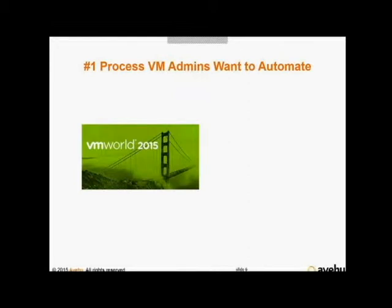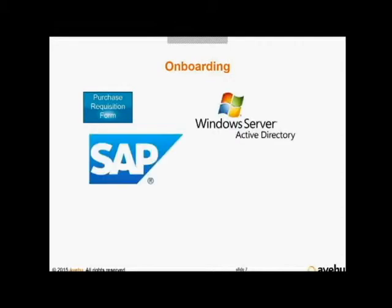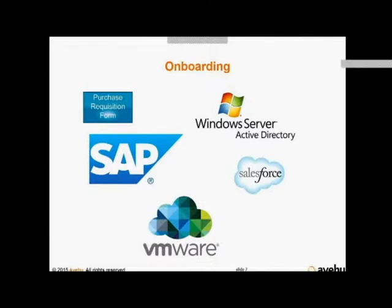Going back to VMworld 2015, with all the many processes that VM admins could apply automation to, there was one process we kept hearing about over and over that IT departments wanted to automate more than any other: new employee onboarding. At many organizations, new employee onboarding has become a very onerous cross-platform process. It involves submitting equipment records, creating an Active Directory account, granting access to SAP, Salesforce.com, the HR system, and of course a VM. We were told it takes up to a week to complete and is usually done entirely manually.